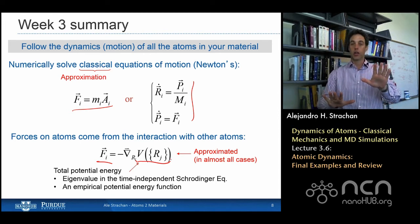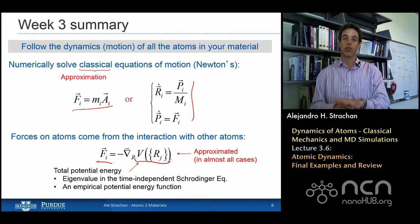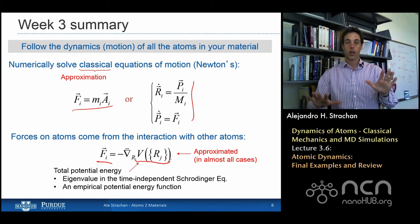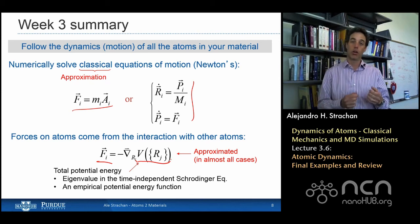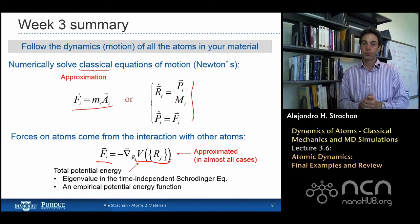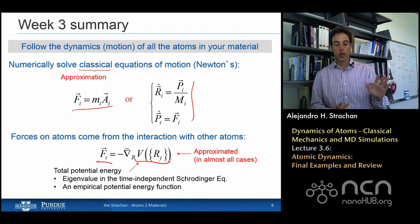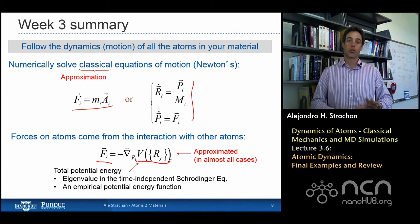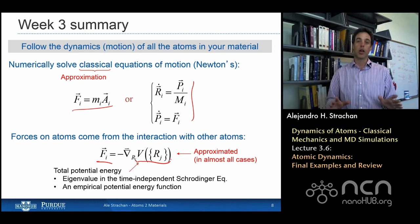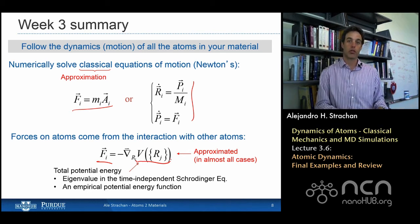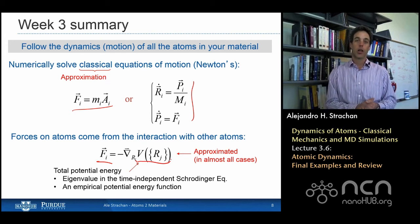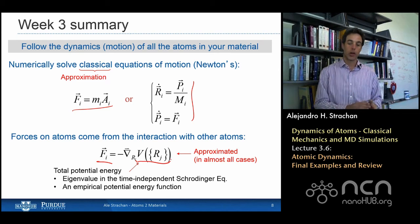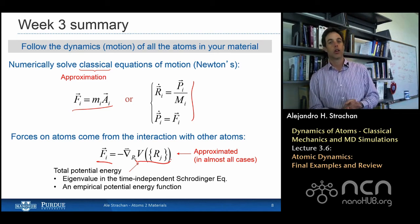So the main two approximations that we're doing when we do molecular dynamics simulations are the interatomic potential, that we almost never know exactly, so we approximate them, and also the fact that it's classical that we're using classical mechanics, which works reasonably well except at very low temperatures. We're going to see next week why that is, and also for very light atoms, and again next week we're going to discuss what happens.